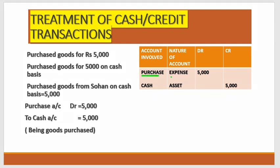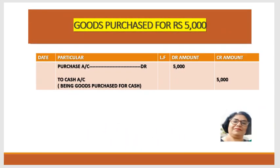So this cash purchase transaction is recorded in the journal as: Purchase account Dr. to Cash account, with debit column ₹5,000 and credit column ₹5,000. Narration: 'Being goods purchased for cash.' Now we see how to record the credit transaction.